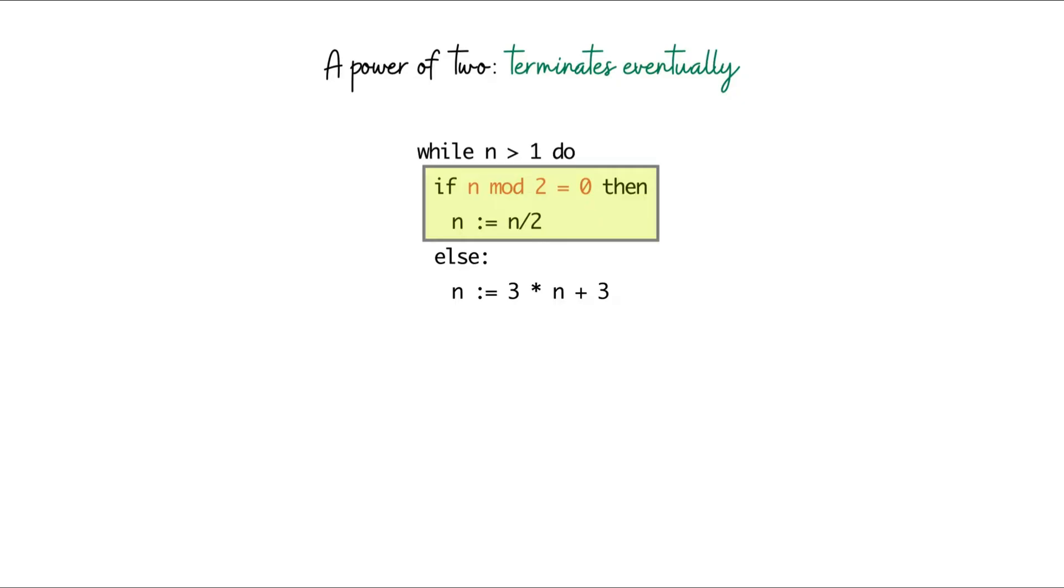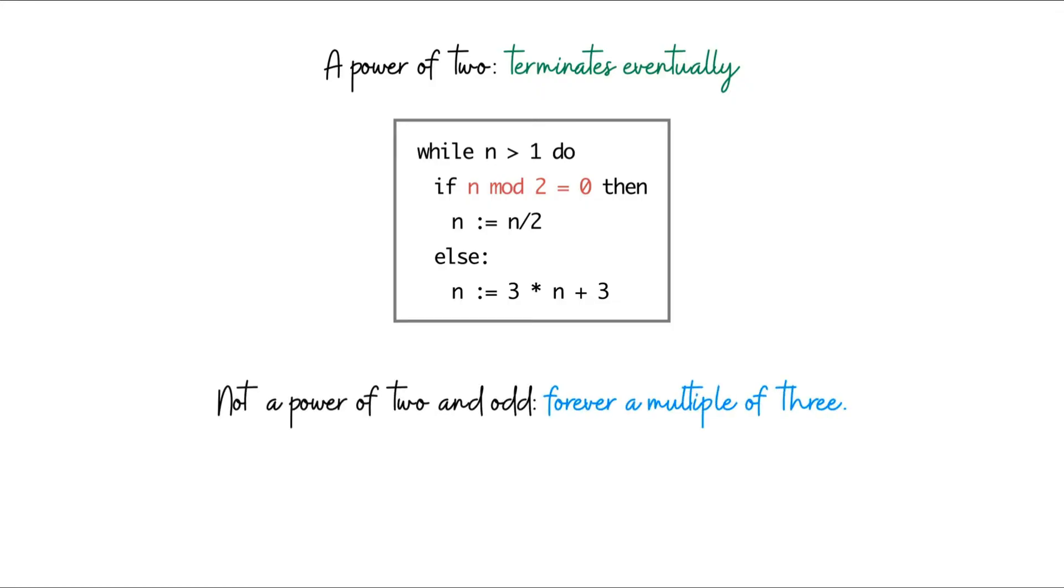Now let's consider the other possibility, which is that n is not a power of 2. When n is not a power of 2, let's split things up into two further scenarios. What if n is not a power of 2 and is odd? Well, in this case, notice that n is always going to be a multiple of 3. Indeed, in the very first step, n gets transformed into 3 times n plus 3. So at this point, it's clearly a multiple of 3. And since in future iterations, we never divide by 3, it should be clear that n is always going to be a multiple of 3. For this reason, it's never going to reach a value of 1, and the program is going to run forever.